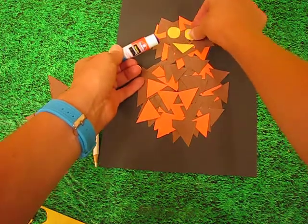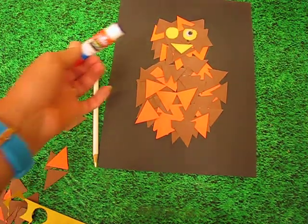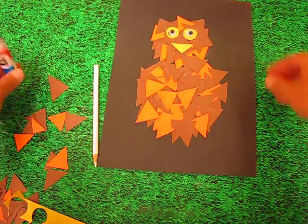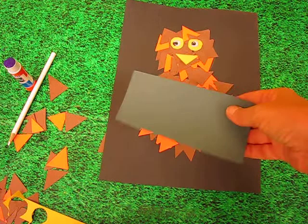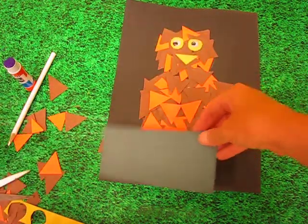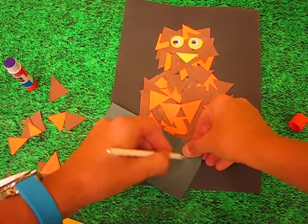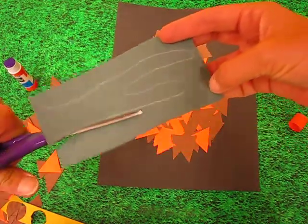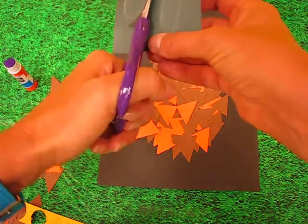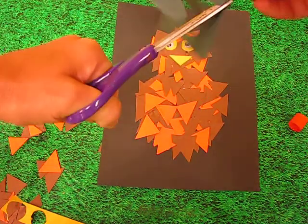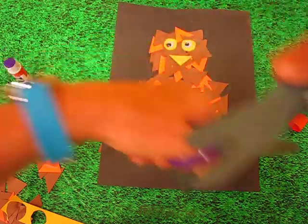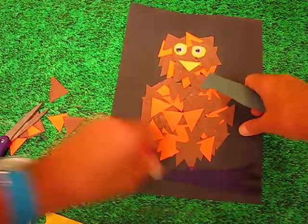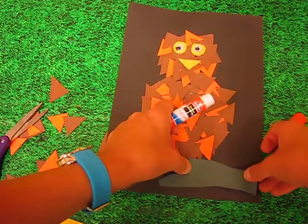I'm going to glue that down. Get my googly eyes. Glue that down. And there. Then you're going to get a piece of green paper and you can draw just a wavy branch just like that. Just looks like a funny hand. Cut it out. And again just glue it down so he's sitting on something.